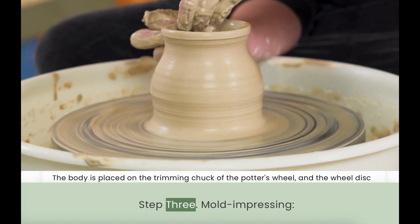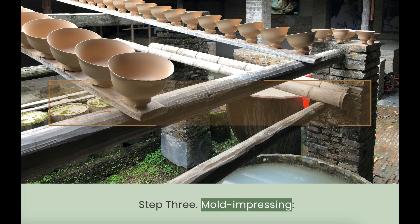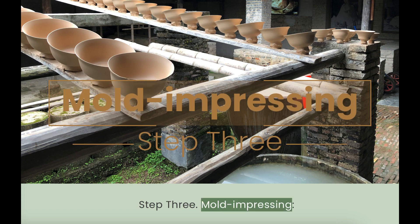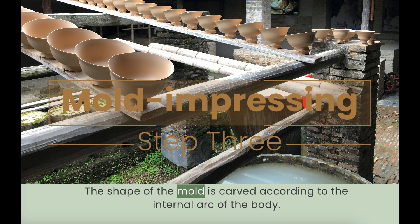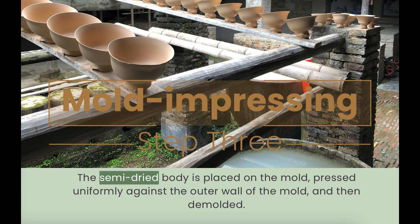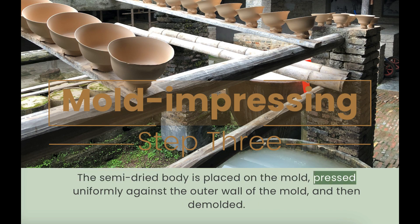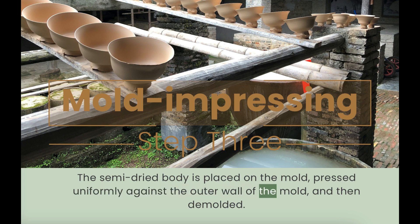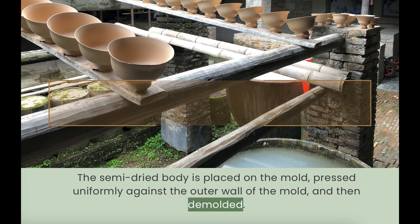Step 3: Mold and Pressing. The shape of the mold is carved according to the internal arc of the body. The semi-dried body is placed on the mold, pressed uniformly against the outer wall of the mold, and then demolded.